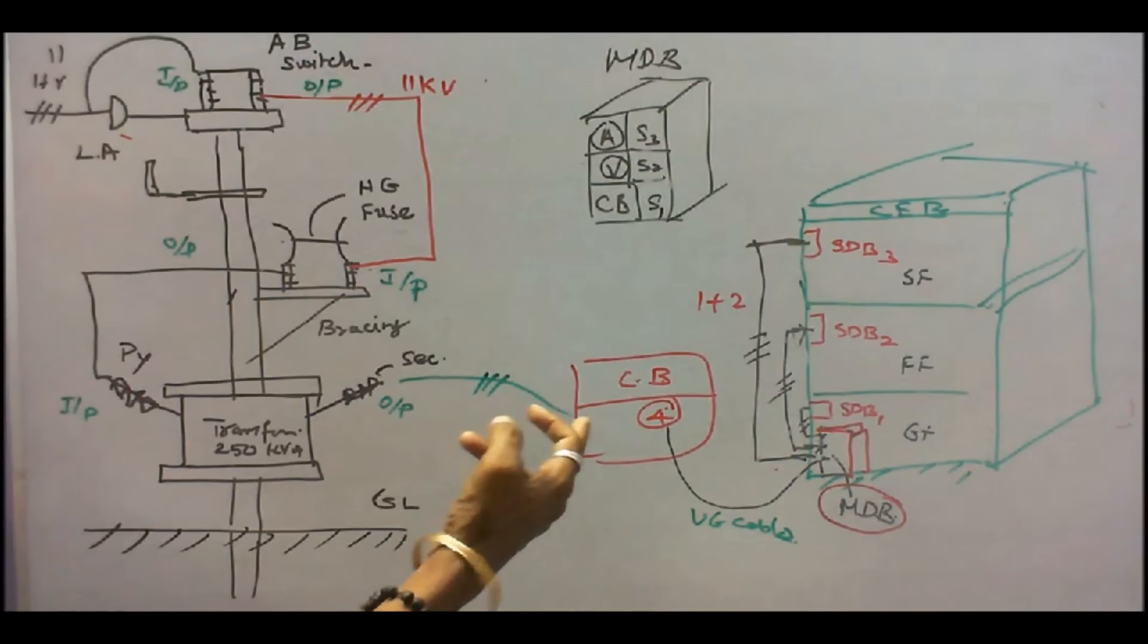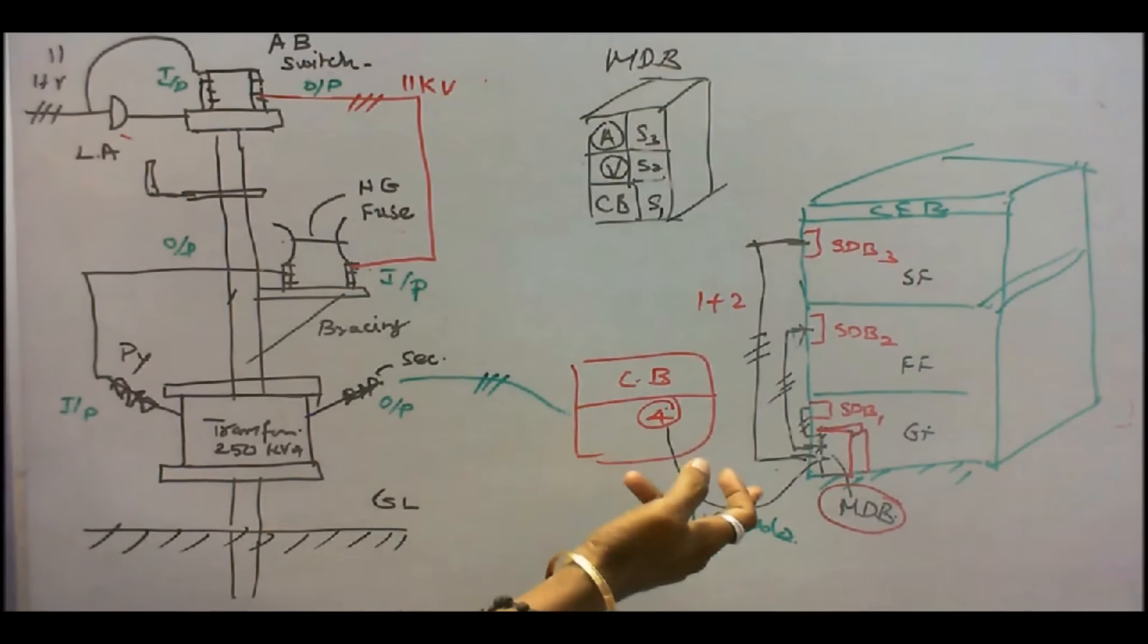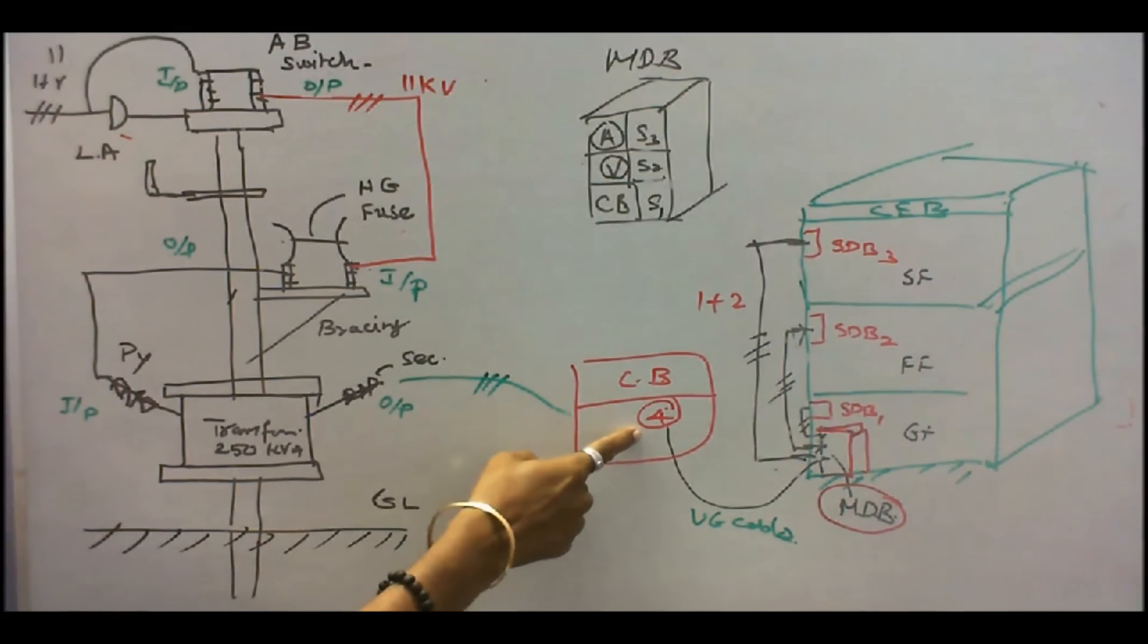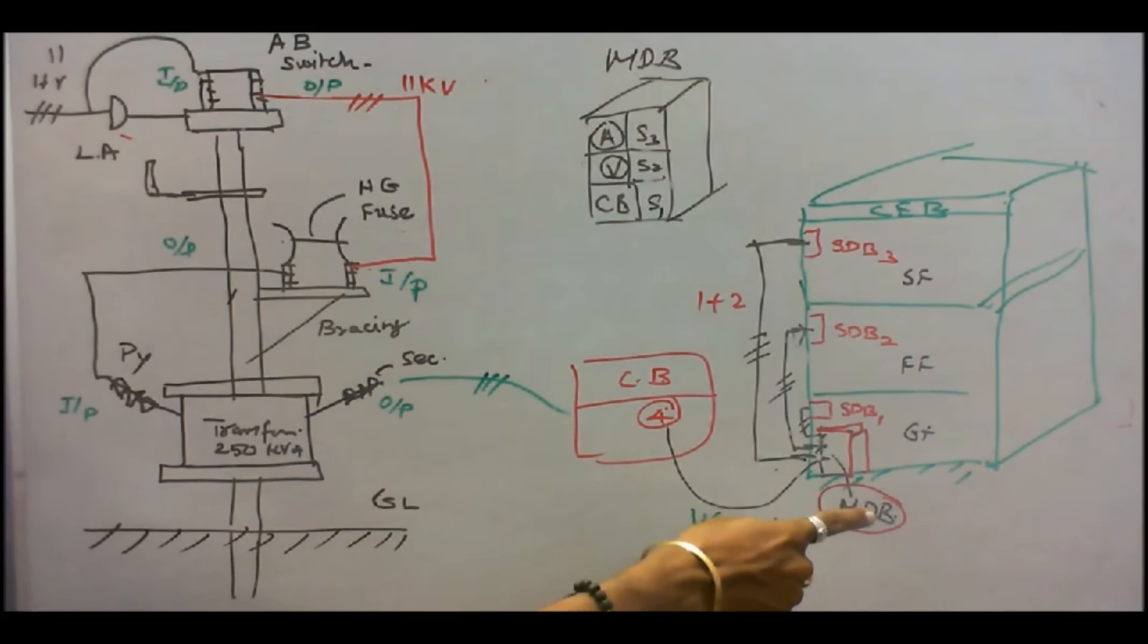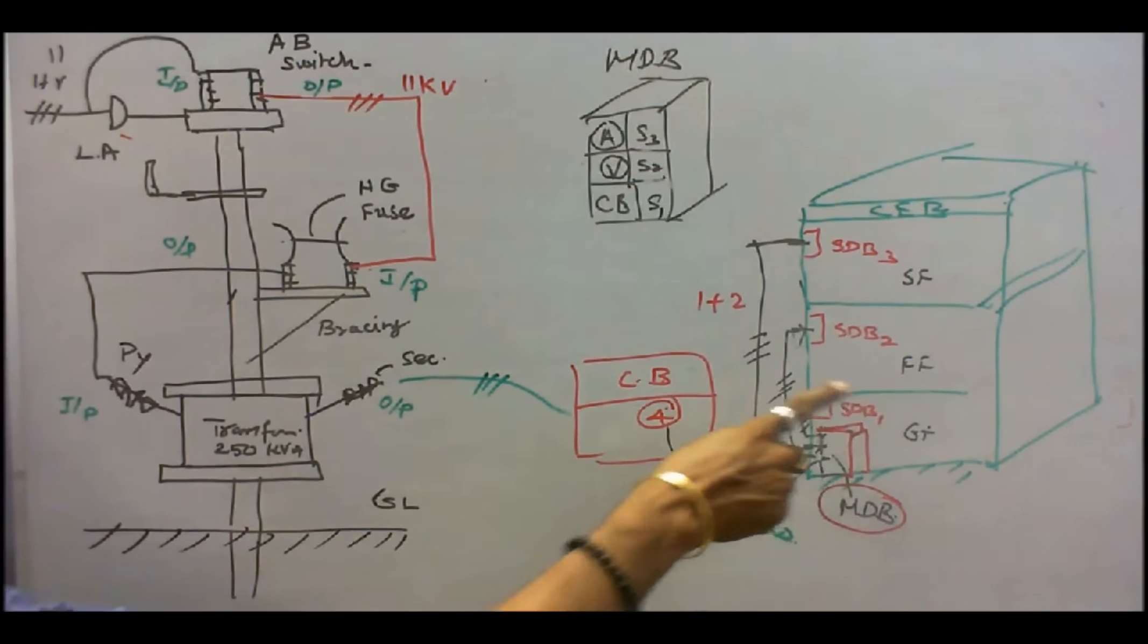Now we will see how distribution takes place in the civil engineering block. This is the main distribution control board. Switch 4 goes to civil engineering block. The civil engineering block is 1 plus 2. Ground floor, first floor, second floor. From switch 4, I am connecting to the MDB, that is main distribution board, through an underground cable.